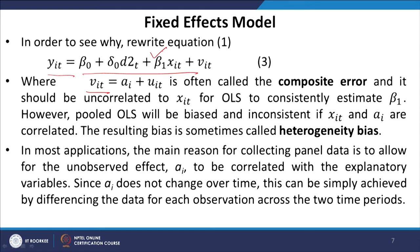In most applications, the main reason for collecting panel data is to allow for the unobserved effect a_i to be correlated with explanatory variables. If a_i and x_it are correlated and we use OLS estimation, the composite error is correlated with the independent variable, which violates one of the Gauss-Markov or CLRM assumptions. So OLS is not applicable in that context. Since a_i does not change over time, this can simply be addressed by differencing the data for each observation across the two time periods.